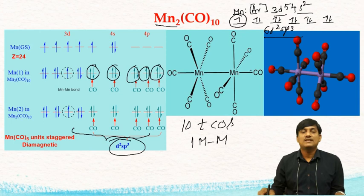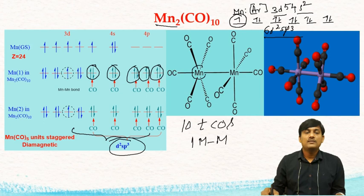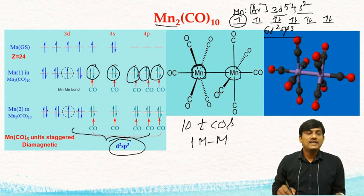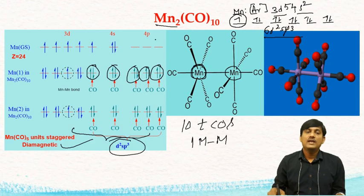The two units — manganese-1 and manganese-2 — are in staggered conformation. Since all electrons are paired, including the one paired via the manganese-manganese bond, the magnetic behavior of Mn₂CO₁₀ is diamagnetic.